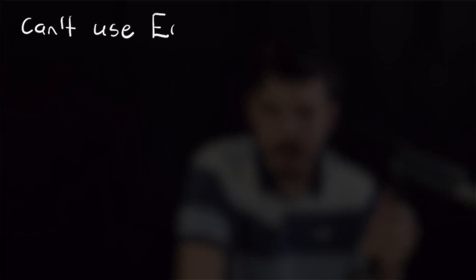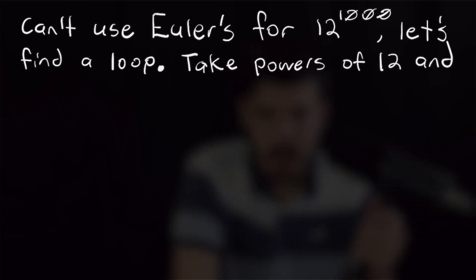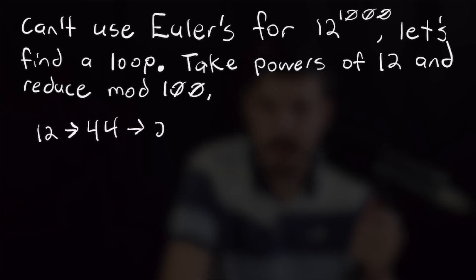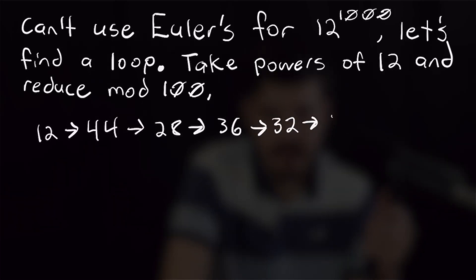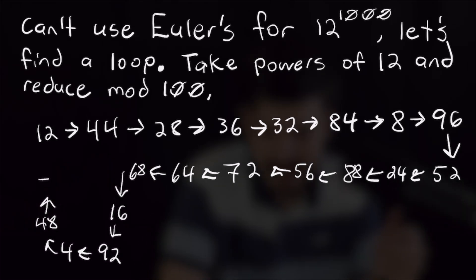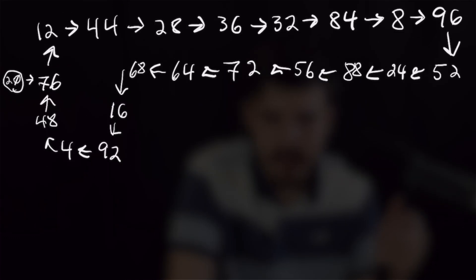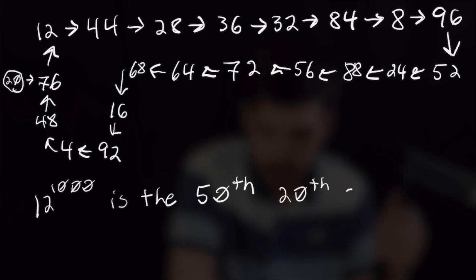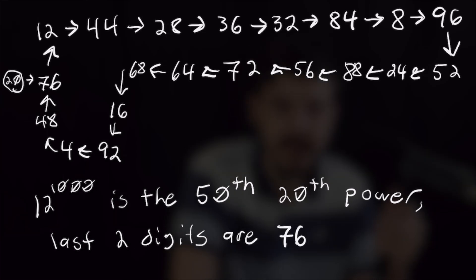Unfortunately, we can't use Euler's formula for 12 to the 1000th. So we're going to try and find a loop to make this problem easier. What we're going to do is take powers of 12 and then reduce them mod 100 to try to figure out a loop. So I'm not going to read all these out, but very quickly, I'm going to write out the loop for you. 12 to the first power is 12, and we can loop that all the way around to see that the last two digits of 12 to the 20th are 76. That's all we need to solve this problem as 12 to the 1000th will be the 50th 20th power, which means it will hit on that 76 in the loop for the 50th time when we get to 12 to the 1000. So the last two digits of 12 to the 1000 will be 76.